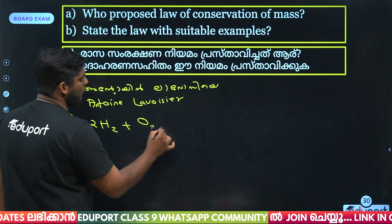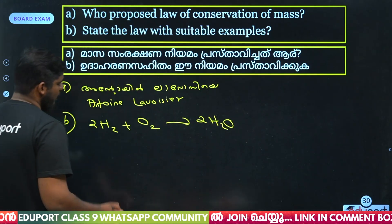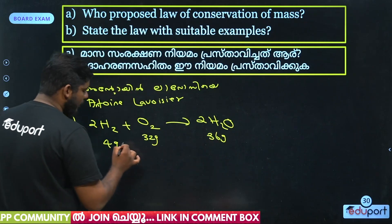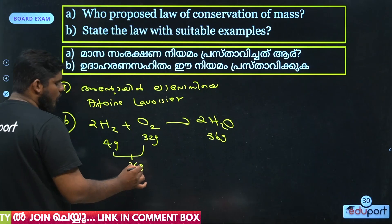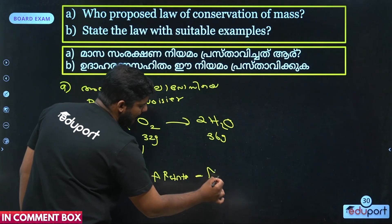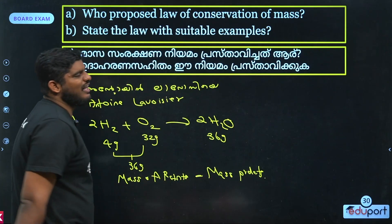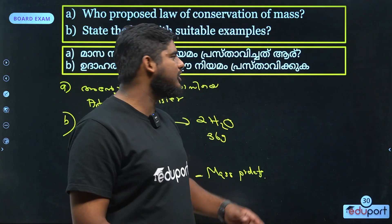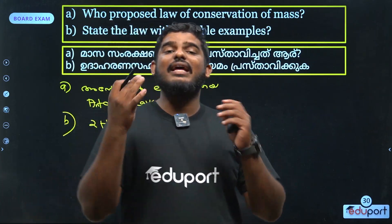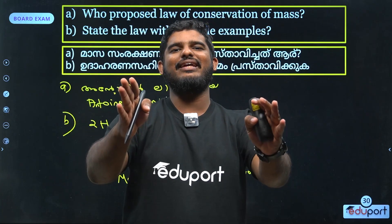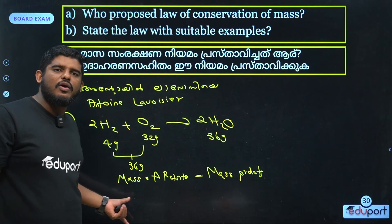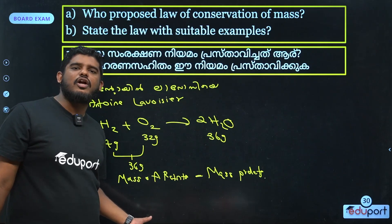2H2 plus O2 gives 2H2O. The mass of reactants are equal to mass of products.